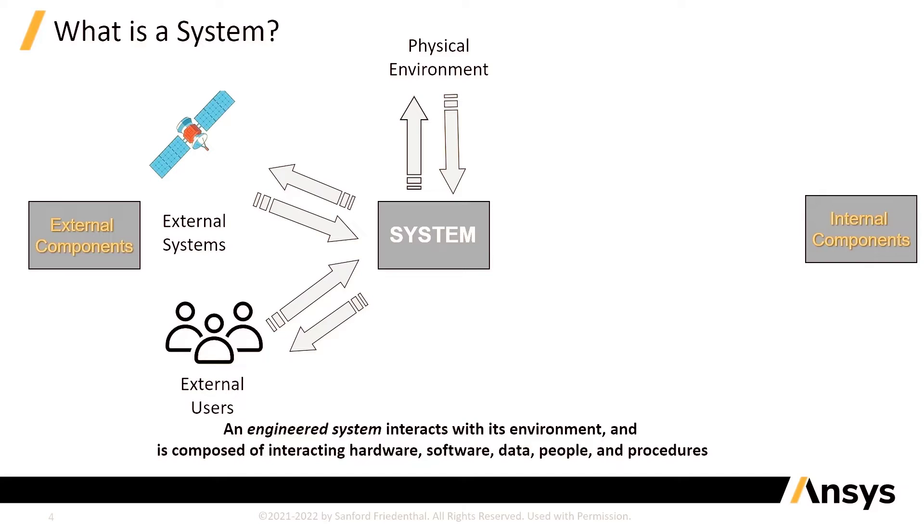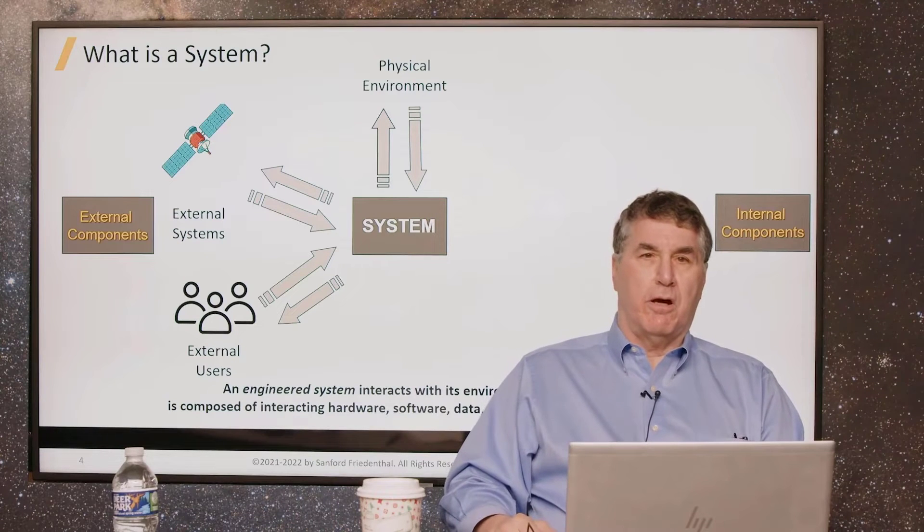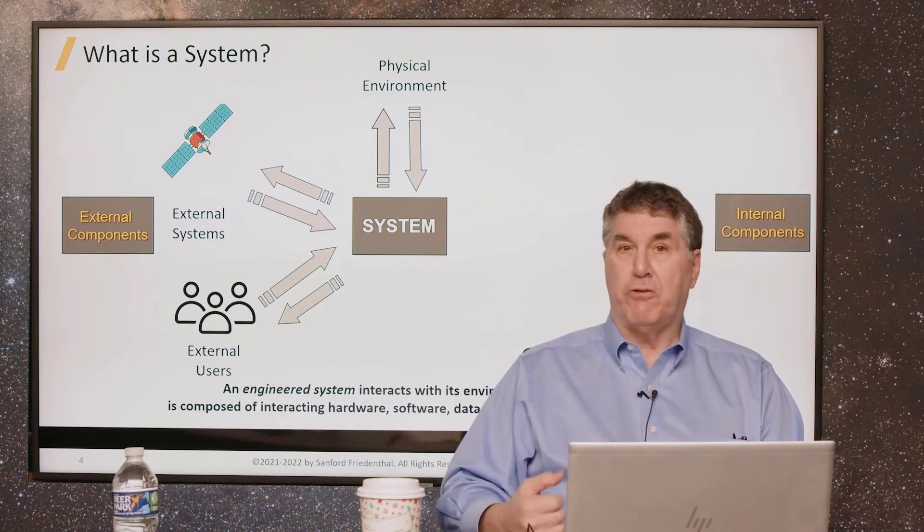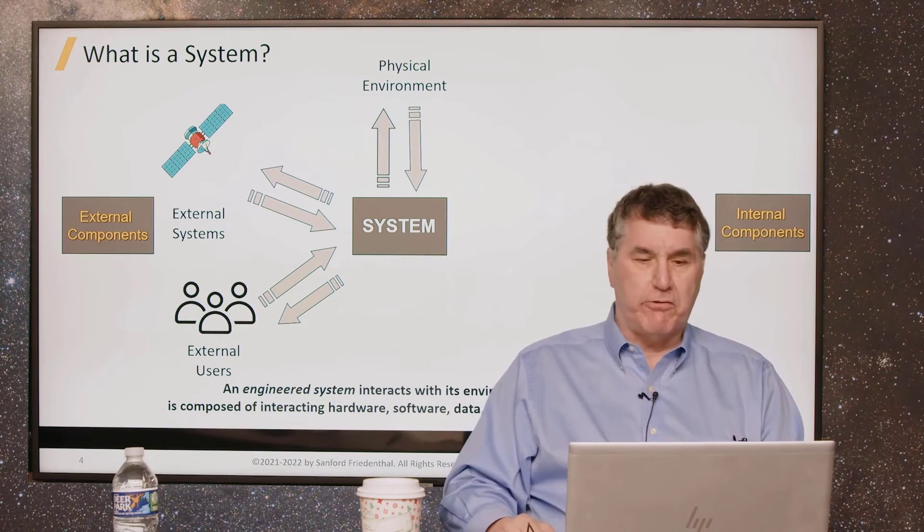This is often called a black box view, where we don't expose the internals of the system. We focus strictly on the external interactions. In traditional systems engineering, there's different documentation that we use to describe the system and its external interactions. We have a system level specification, interface control documents at the system level which define the interfaces between the system and the external entities.